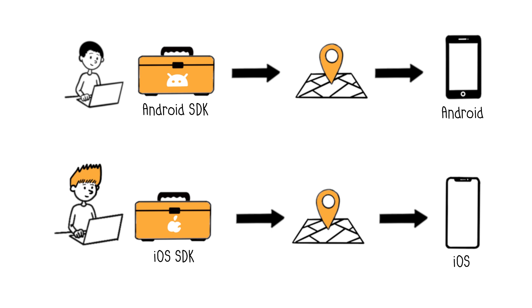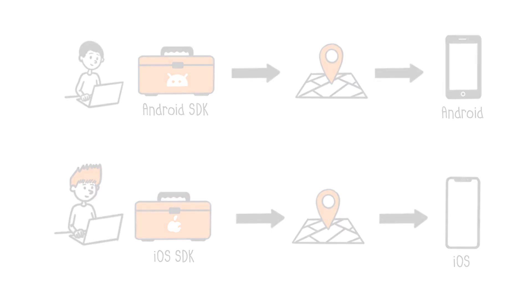Thus, for the Google Maps application, we will have two different SDKs: one for Android development, and the other for iOS. The content of an SDK will vary depending on the organization providing it for their platform.